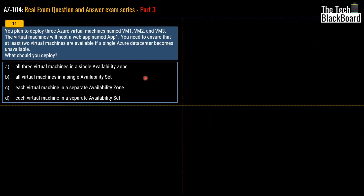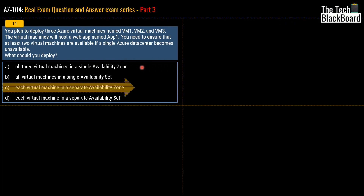As shown in the documentation, each availability zone can have at least one data center, or more. Our question requires at least two virtual machines to always be available. If you deploy all VMs in a single availability zone with one data center and that zone goes down, all virtual machines are lost. Therefore, the correct answer is to deploy each virtual machine in a separate availability zone — option C — so that if one zone is down, the others remain accessible.